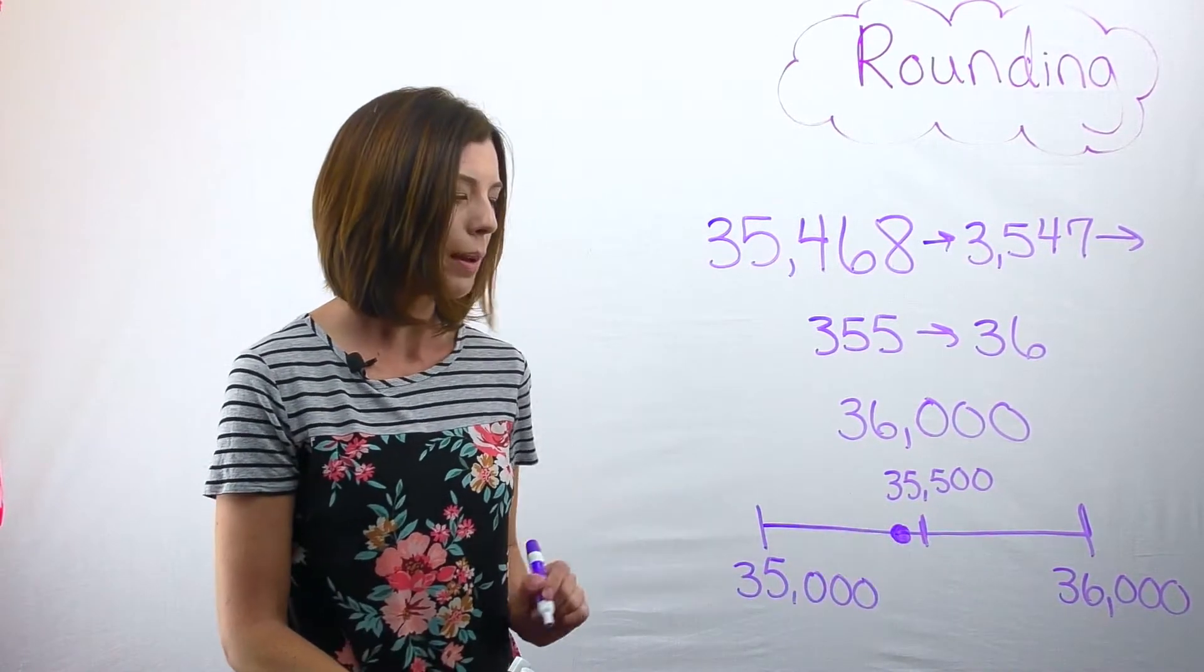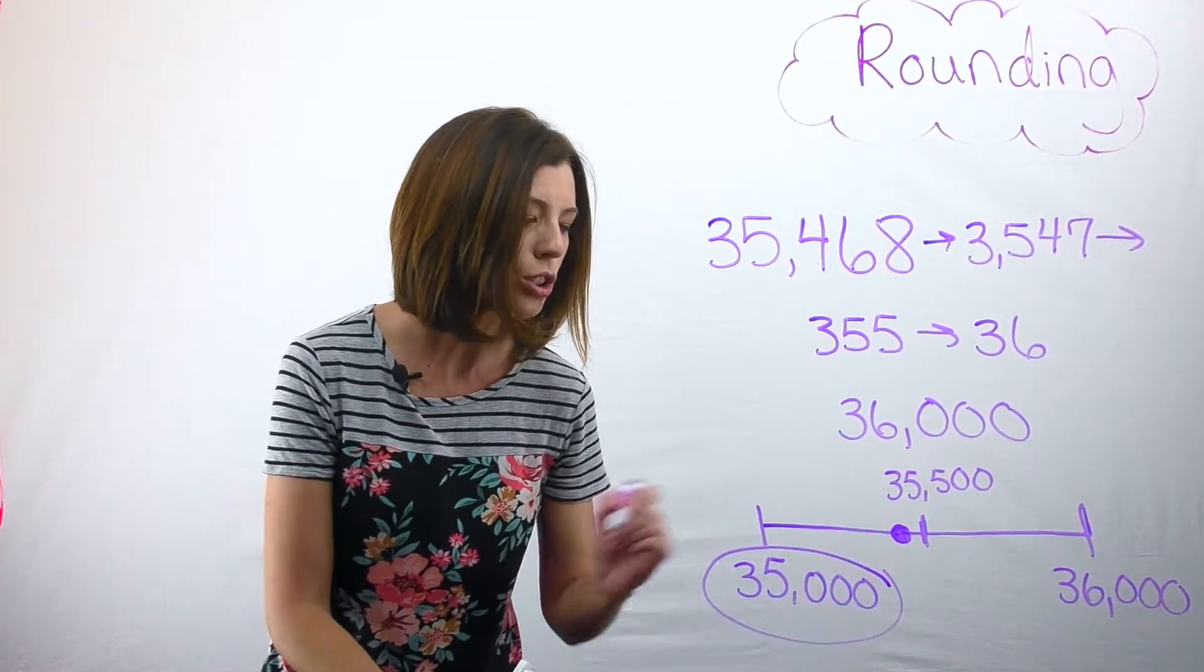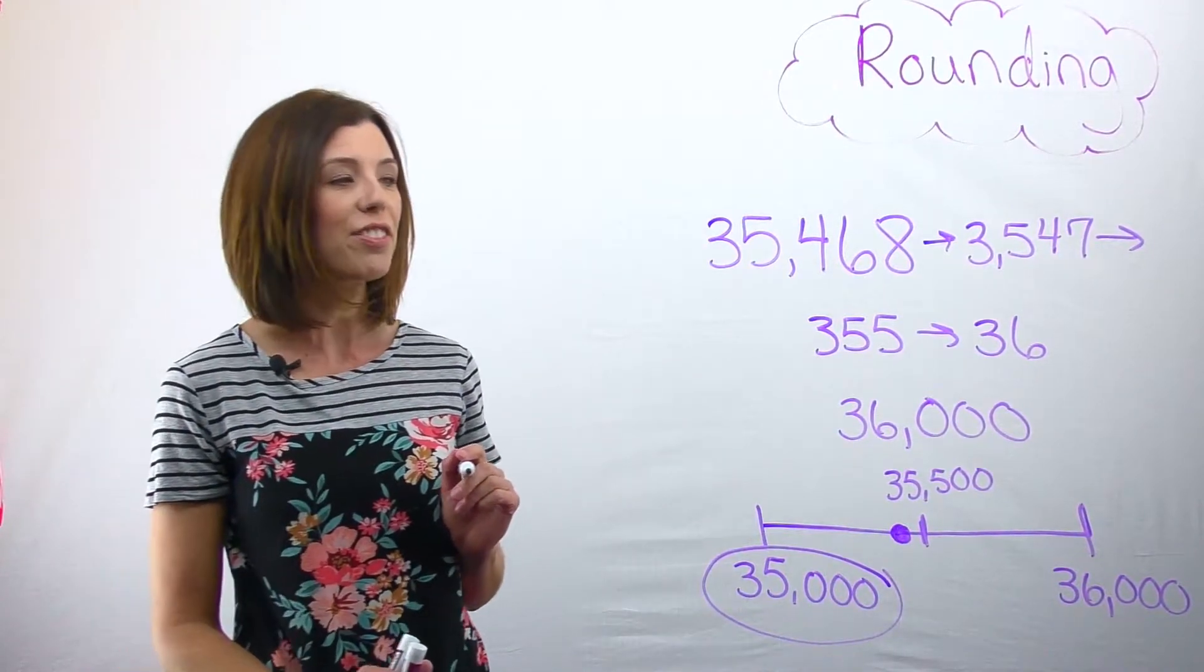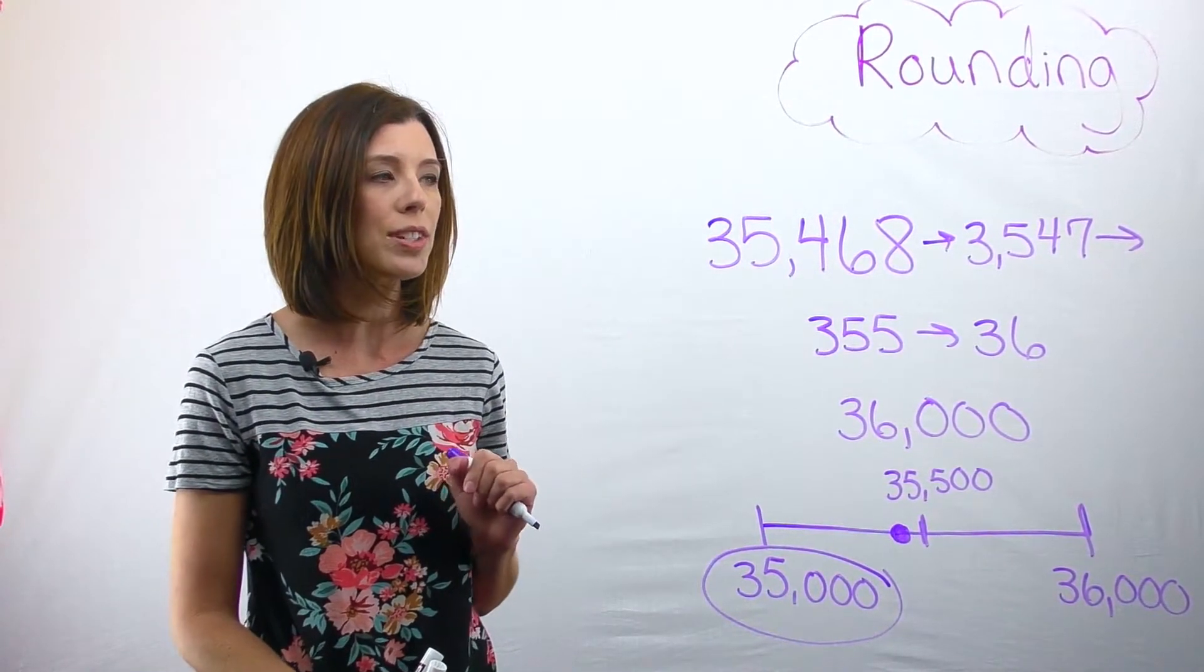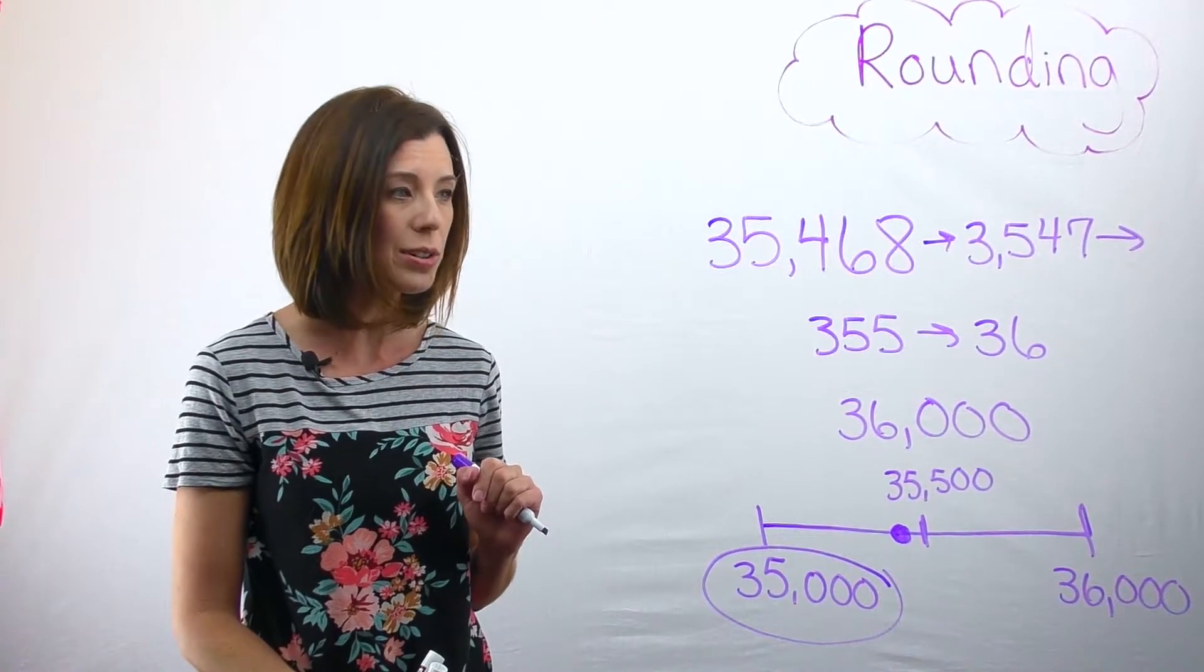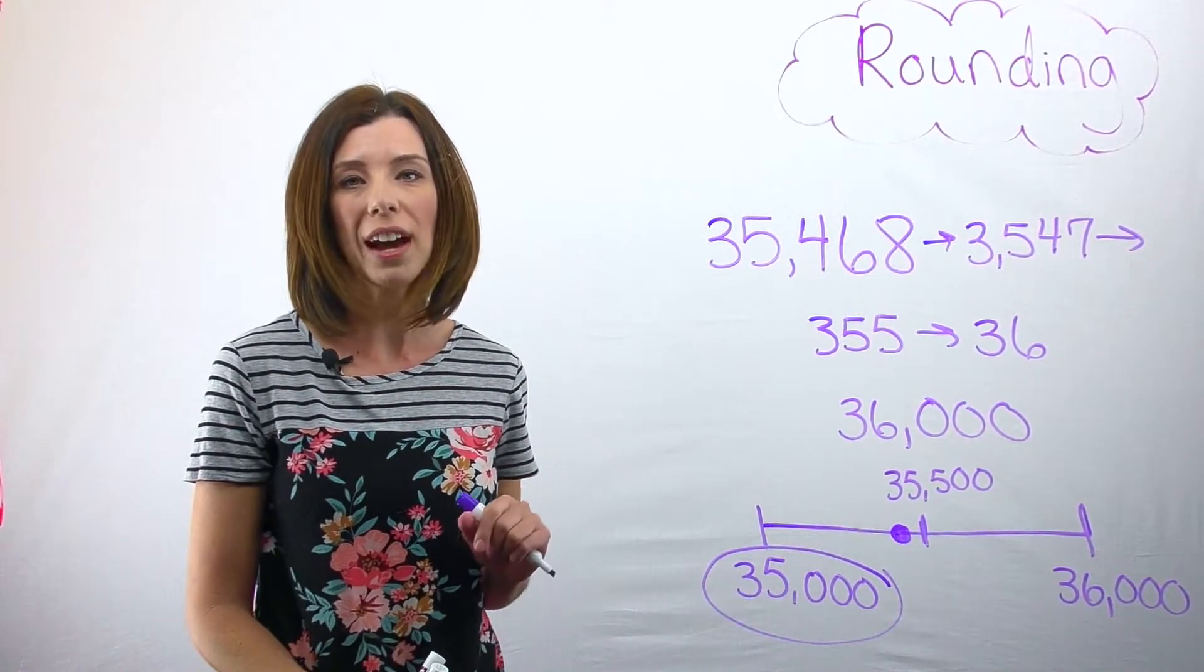It's close, but it's going to go about here. So really my answer should be $35,000. So $35,468 rounded to the nearest thousand would be $35,000.